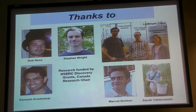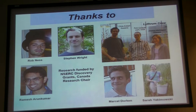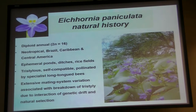The work on Eichhornia is really a collaboration between Rob Ness, who did a PhD in my lab, Stephen Wright, my colleague at Toronto, and Ramesh Arunkumar, a PhD student with me. The work on Lythrum was started by Chris Eckert as a PhD student, then Rob Colletti and Jessica Montague, who both did graduate degrees. And the work on Sagittaria involves two PhD students, Marcel Dorkin and Sarah Yakimowski.